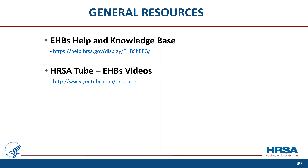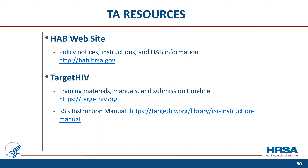There are several resources available to you, including the EHBs help and knowledge base. You can access the help and knowledge base by going to help.hrsa.gov or clicking on the URL provided on this slide. We also have a wealth of videos to help you navigate the EHBs available at youtube.com/hrsatube. Here are some helpful resources to consult when reporting. The HAB website is the place to find policy notices and instructions, as well as other general information concerning the Ryan White Program. On the target HIV website, you can find the submission timeline, the listserv, past webinars, the RSR instruction manual, and a wealth of other materials related to the RSR. Note, a new 2022 RSR instruction manual will be out later this year.